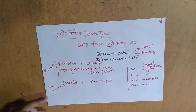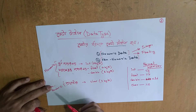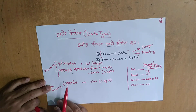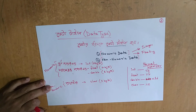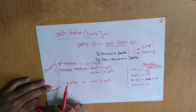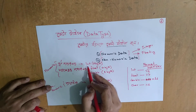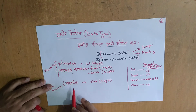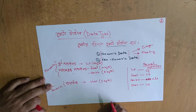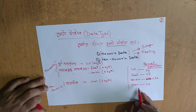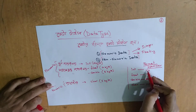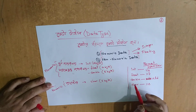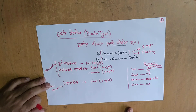We know that data types are two different types: one is numeric, one is non-numeric. Numeric types are three: int, float, and double. Non-numeric is character. The format specifiers are: int is %d, float is %f, double is %lf.